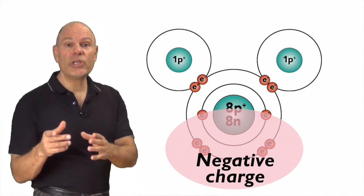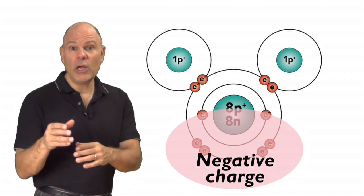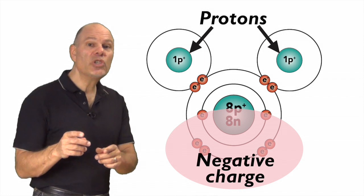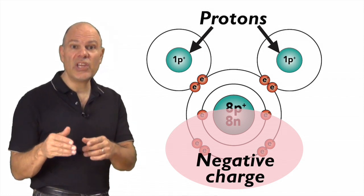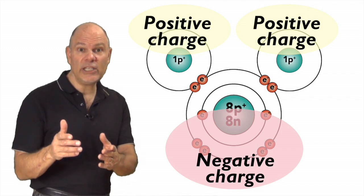And because the electrons spend most of their time over here, by the oxygen, they're rarely over here, by the hydrogens. That results in two exposed protons on the hydrogen side of the molecule, which results in two positively charged regions.